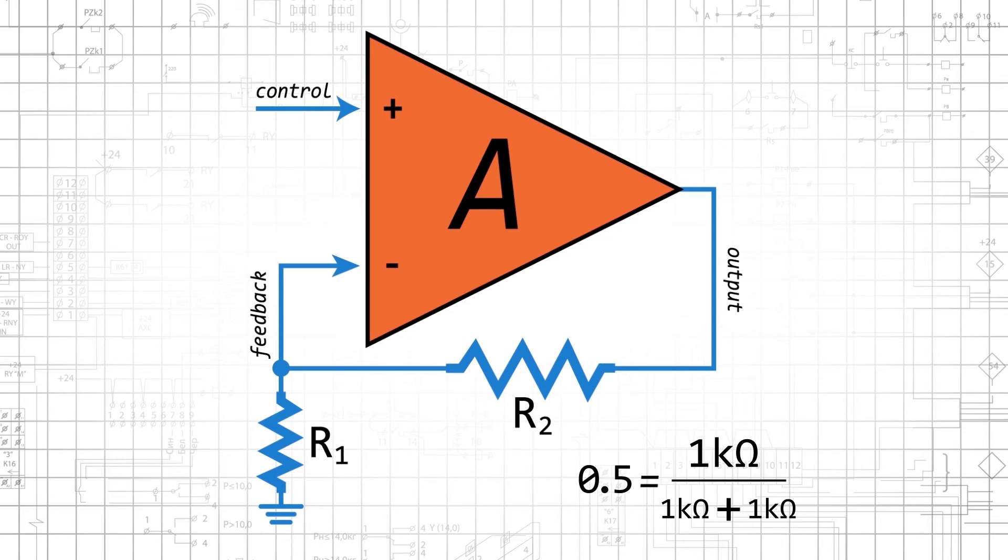This would result in an amplifier with a gain of 2, and we can adjust the gain by choosing different resistance values.